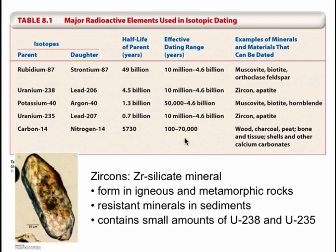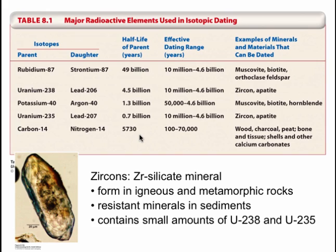While different minerals can trap different elements, a favorite of geochemists is zircon, a zirconium silicate mineral commonly found in a variety of igneous and metamorphic rocks. Zircon is a very resistant mineral, and it often contains small amounts of uranium which decay over very long periods of time, so it's useful for dating very old rocks. Note that carbon-14 is special — it's an isotope that can be used only to date things that were once alive, and it has a very short half-life, limiting the age range over which we can date things with carbon-14.